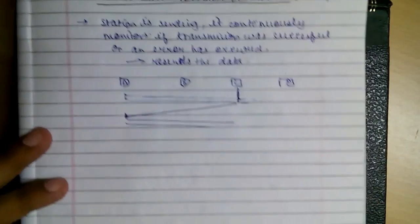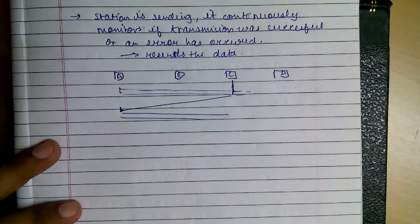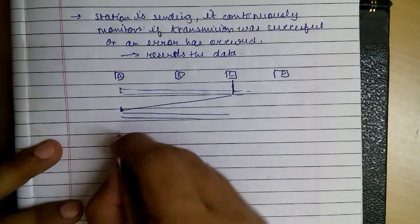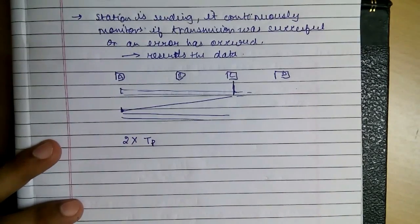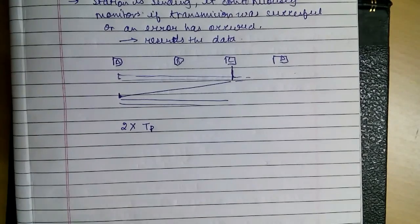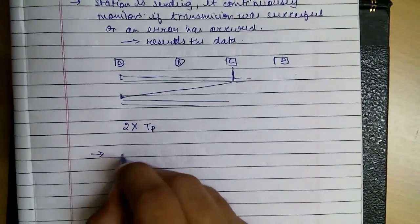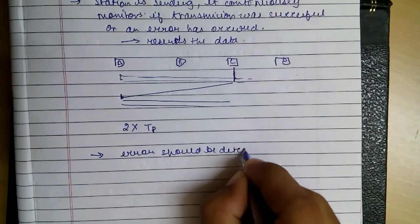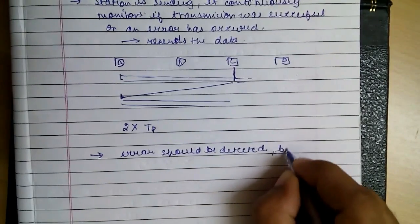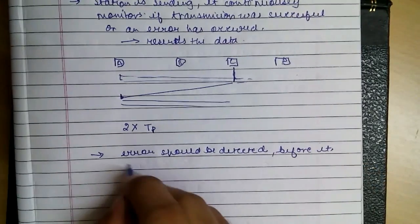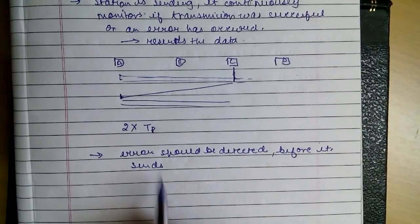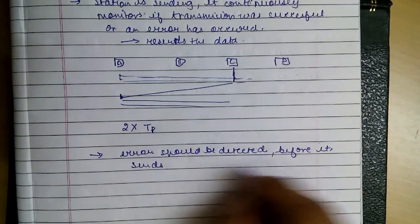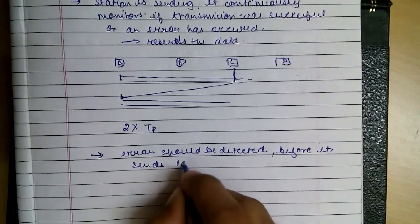So what happens in this is that the time it takes to send should be at least 2×Tp, that is twice the propagation time. As the station is sending, it should detect the error before it sends the last bit. Because once the last bit is sent, it doesn't keep any copy of the frame and moves on with the next frame.